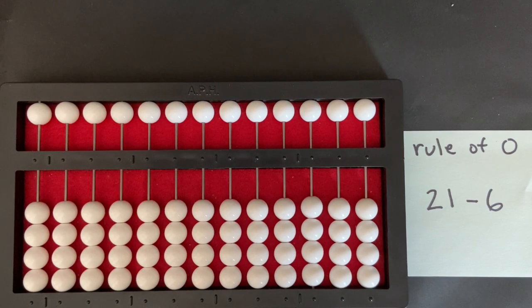Our next rule for subtraction we're going to use is the rule of zero, and this is using the counting method.